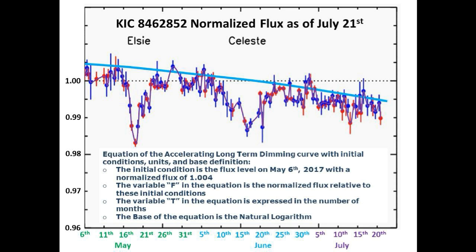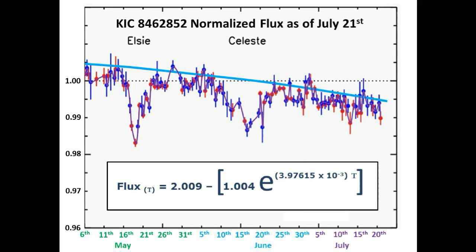Now we are going to discuss our best estimate of the equation of the long-term accelerating dimming curve. The initial conditions, units, and base definition are as follows: the initial condition is the flux level on May 6, 2017, with a normalized flux of 1.004. The variable F in the equation is the normalized flux relative to these initial conditions. The variable T is expressed in the number of months, and the base of the equation is the natural logarithm.